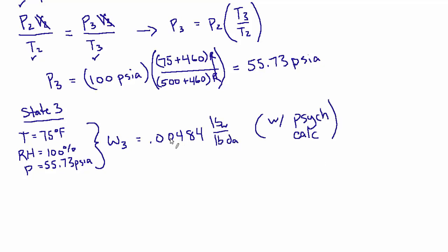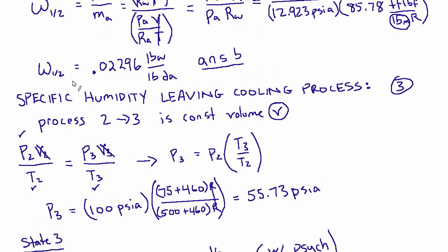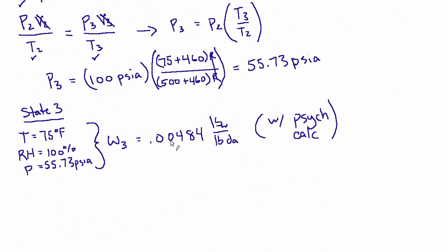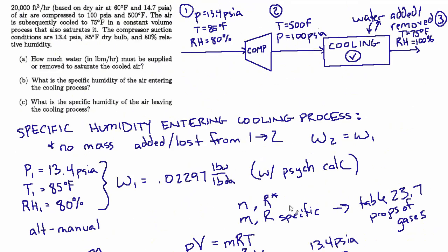And this tells us something important. This is much lower than the humidity ratio, the answer from the previous part. At state two, it was 0.02 pounds of water per pound of dry air. Now it's 0.004. So the humidity ratio of three is less than the humidity ratio of two. That means that water has been removed.